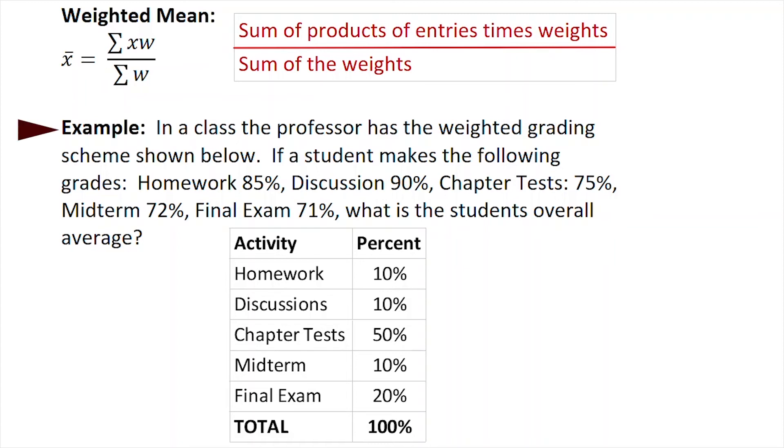In a class, the professor has the weighted grading scheme shown below. The weighted grading scheme is 10% for homework, 10% for discussions, 50% for chapter tests, 10% for midterms, and 20% for the final - that's 100%. The student makes the following grades: 85% for homework, 90% for discussion, 75% for chapter tests, 72% for the midterm, and finally 71% on the final. What is the overall average?